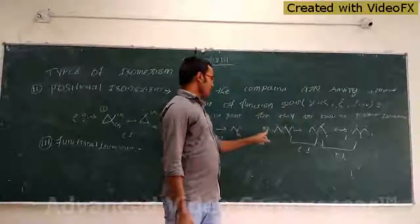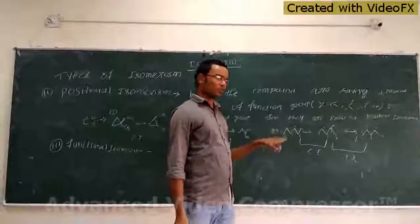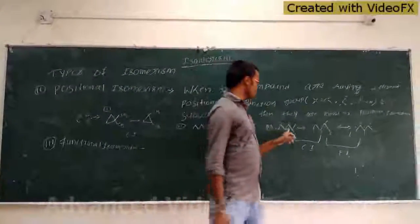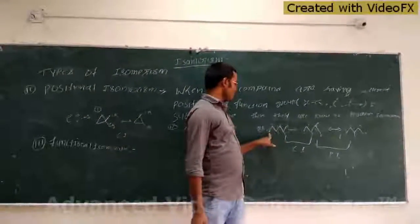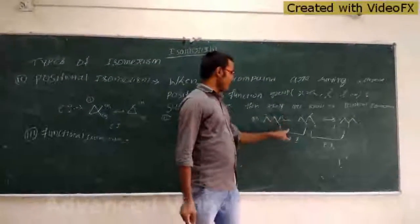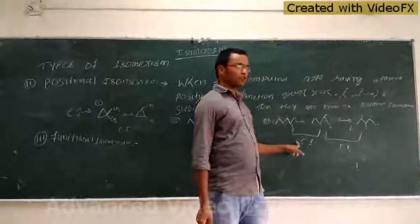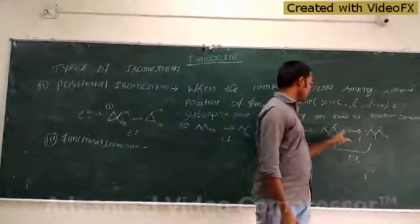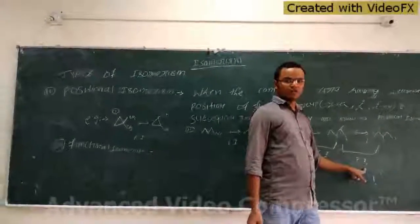Here, the position isomers are the same molecular formula. If the parent chain is the same, this is a position arrangement. See this example — this is a one compound with chain 1, 2, 3, 4, 5, 6 and here 1, 2, 3, 4, 5. But you can see that the position of the substituent on carbon 3 is different. So this is called positional isomerism.